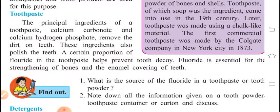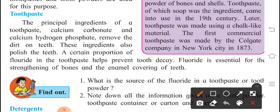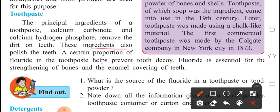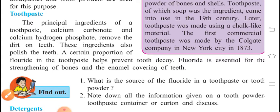The principal ingredients of a toothpaste, calcium carbonate and calcium hydrogen phosphate to remove the dirt on teeth. What are the principal ingredients of toothpaste? Calcium carbonate and calcium hydrogen phosphate. What are the uses of these? To remove the dirt on teeth. These ingredients also polish the teeth. A certain proportion of fluoride in the toothpaste helps prevent tooth decay. Fluoride is essential for the strengthening of bones and enamel covering of teeth. The white layer is there on your teeth. So, that cover stability is there with the toothpaste.